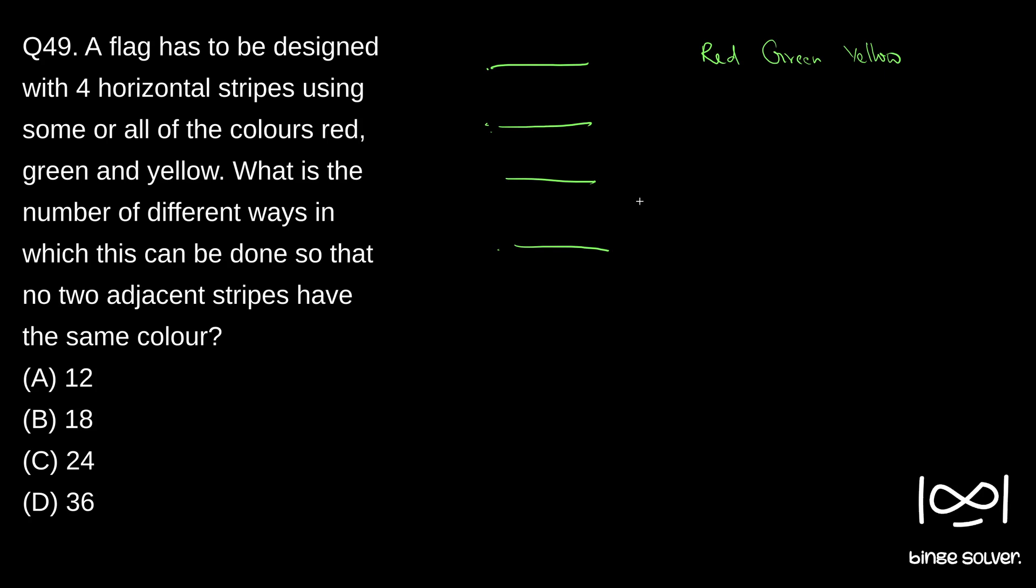So as you can see, the first stripe will have three choices—we can color any three colors for the first stripe. So once that is done, when we go to paint the second stripe we have only two choices left. So we choose one, say randomly we chose red for the first stripe, then the second stripe can be painted only with green or yellow.